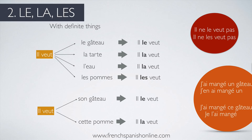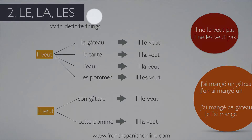The negative form is il ne le veut pas. As you can see, the pronoun sticks to the verb. The first part of the negative form, NE, comes before, and PAS comes after — so NE ... LE VEUT ... PAS, or il ne les veut pas.